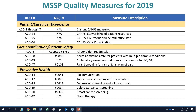The depression screening and follow-up plan measure covers ages 12 and up. Providers use an age-appropriate screening tool, the patient is screened once per performance period, and if positive, a follow-up plan must be documented on the date of the screen — not later. Documentation must include the name of the age-appropriate screening tool used. The follow-up plan can include pharmacological treatment, referral to a psychologist, or a behavioral health program care plan.